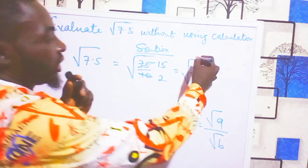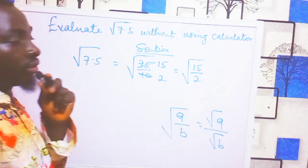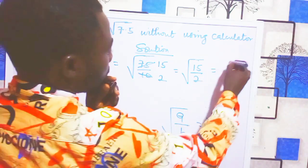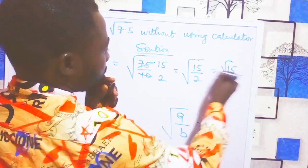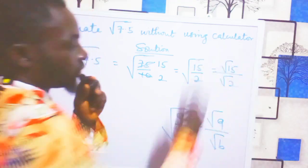Because I've simplified mine, what I have now is square root of 15 over 2. This becomes square root of 15 over square root of 2.